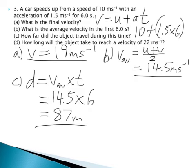Okay, question D. How long will the object take to reach a velocity of 22 metres per second? To do this, we need to rearrange this equation, V equals U plus AT, to make T the subject. So doing that, we get T equals V minus U over A.